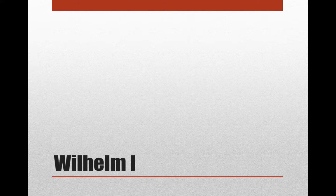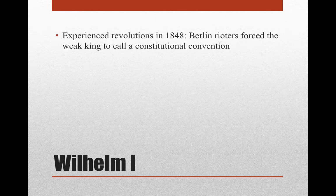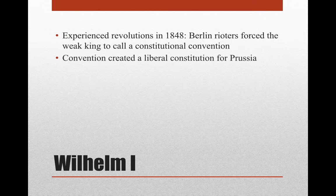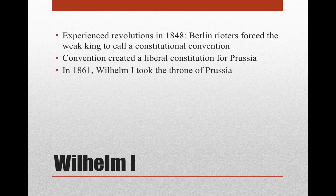So Wilhelm I becomes the leader of Prussia. Prussia had gone through revolutions in 1848, much like a lot of the other European states we talked about. Rioters in Berlin forced the king to basically write a constitution, and this constitution was fairly liberal — it took away power from the traditional ruling family and a lot of the nobility called the Junkers.